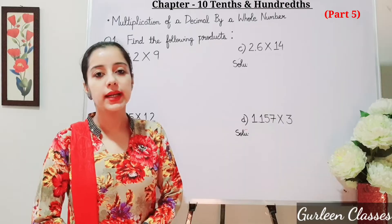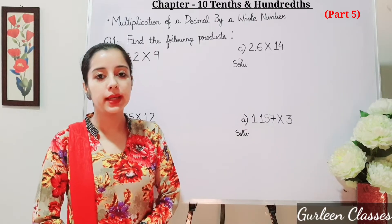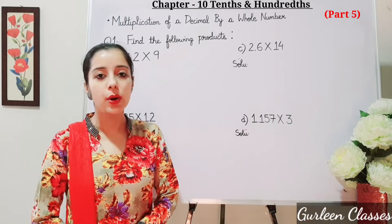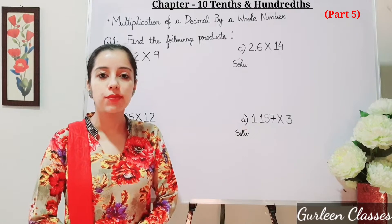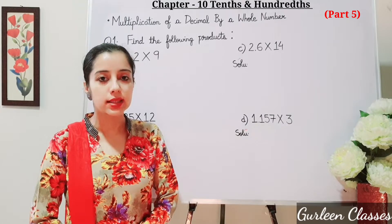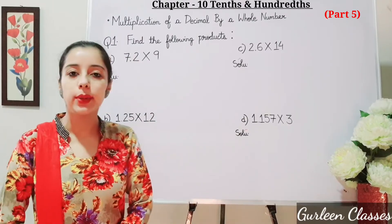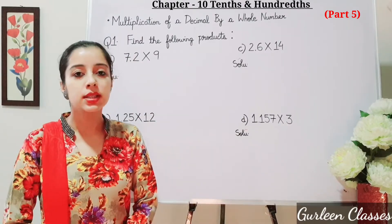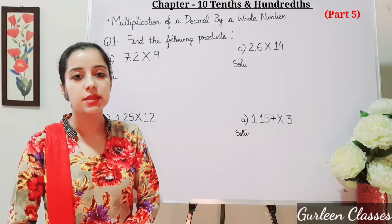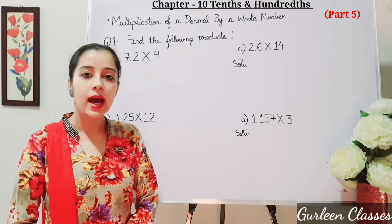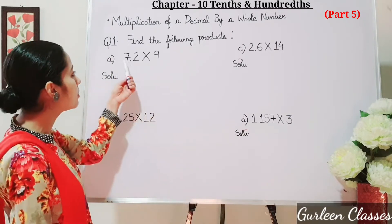So let us start with the first topic of today: multiplication of a decimal by a whole number. Question number 1 is find the following products. Part a: 7.2 into 9. So students, the first step is to ignore the decimal point and just multiply.